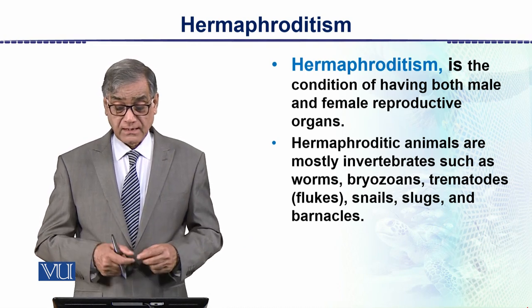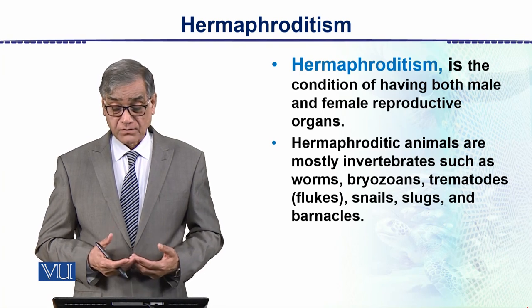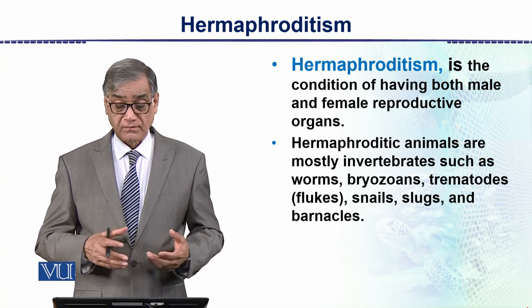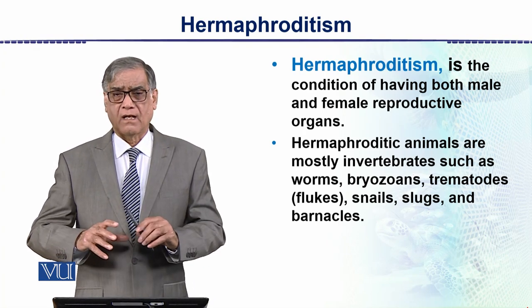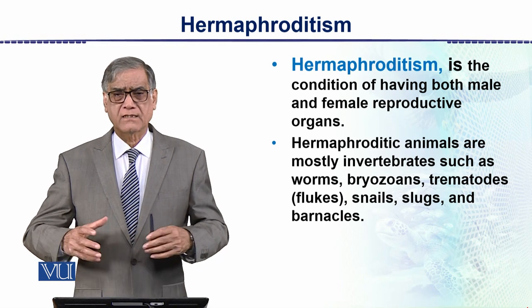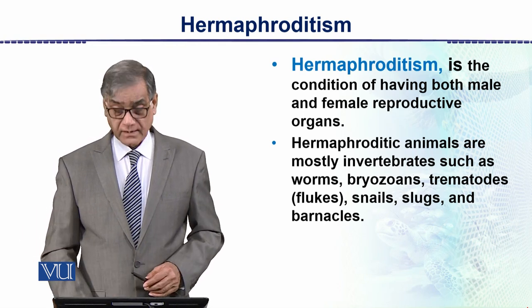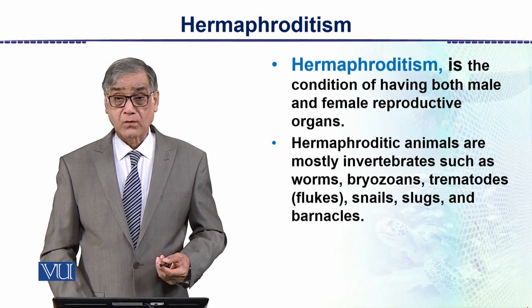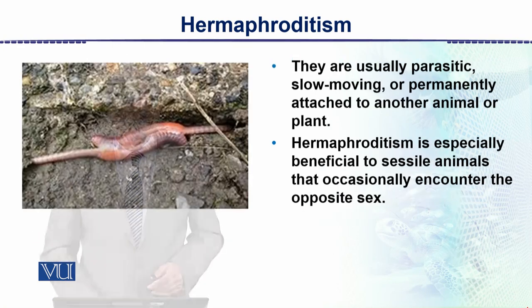Hermaphroditic animals are mostly invertebrates, such as worms — that is, cestodes — the trematodes, which include flukes, snails, slugs, and barnacles. All of these are invertebrates. Mostly they are aquatic and they live in very moist conditions. They are usually parasitic, slow moving, or permanently attached to another animal or plant.